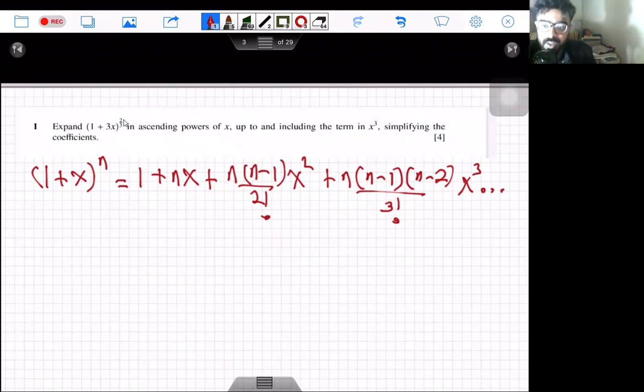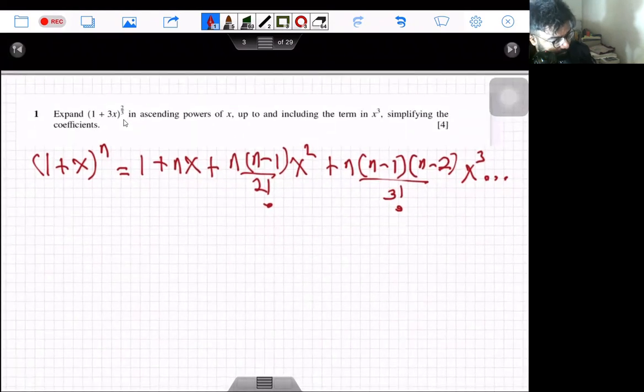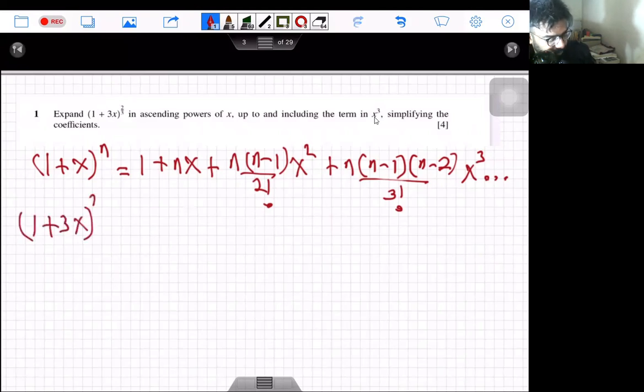So in place of x we have 3x, so if we expand it we will actually get infinite terms but we need to only go up to the term including the term in x³. So (1 + 3x) whole thing raised to the power 2/3, the expansion will be: